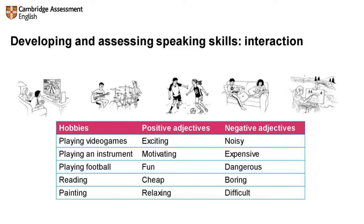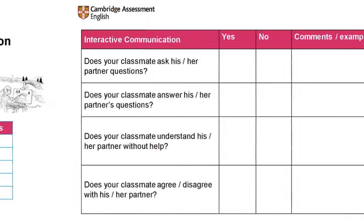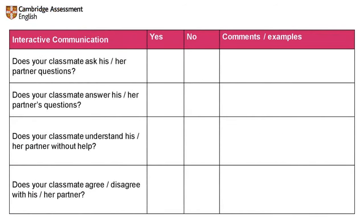In Part 2, students have visual input and need to express their opinions and talk about their experience — everything is very personal. They don't need to speculate or use other levels of language. It's just about them and very familiar topics. In this case, hobbies — do you like these different hobbies? They speak to each other for two minutes about each. If you give them a little grid with positive and negative adjectives, and give them the language and support, they can carry out the task and assess each other with a tick-cross checklist.